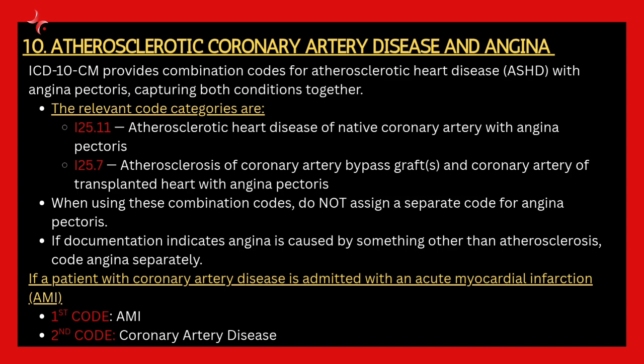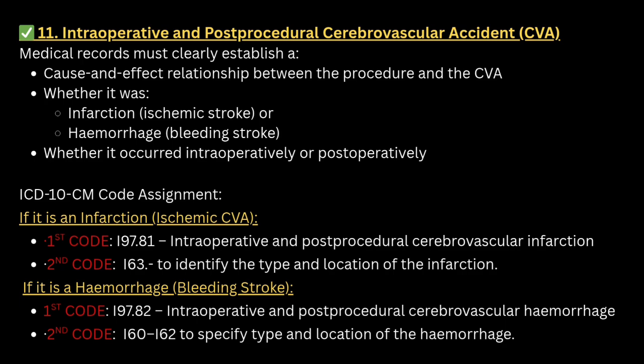Next: atherosclerotic coronary artery disease and angina. Atherosclerosis means thrombus formation in the artery. We have two categories: I25.11 for atherosclerotic heart disease of native coronary artery with angina, and I25.7 for atherosclerosis in the transplanted heart or bypass graft. There is no need to code angina separately because it is already included in the combination code.